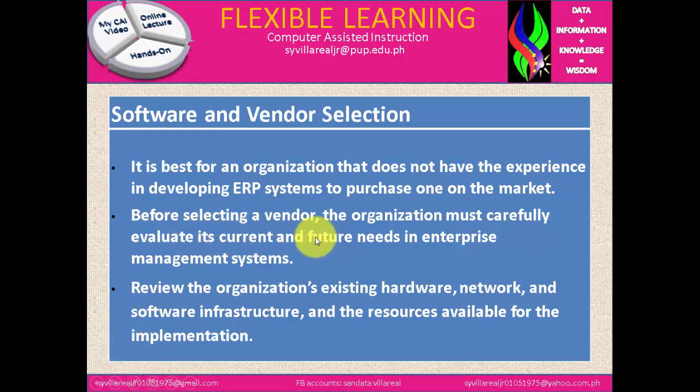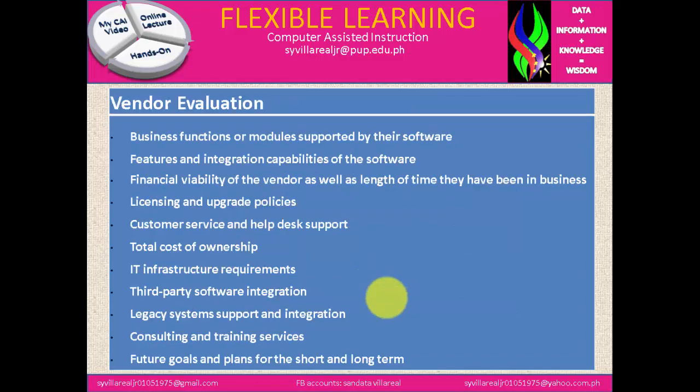Before selecting a vendor, the organization must carefully evaluate its current and future needs in enterprise management systems, review the organization's existing hardware, network, and software infrastructure, and assess the resources available for implementation. Vendor evaluation criteria include: business functions or modules supported by the software, features and integration capability, financial viability of the vendor and length of time in business, licensing and upgrade policies, customer service and help desk support, total cost of ownership, IT infrastructure requirements, third-party software integration, legacy system support and integration, and consulting and training services.